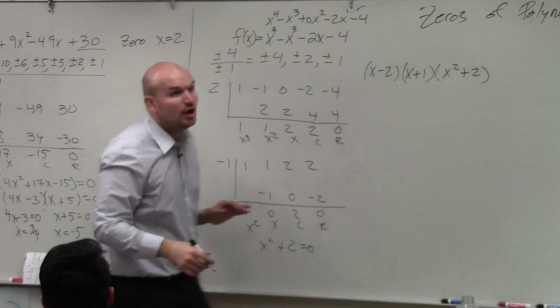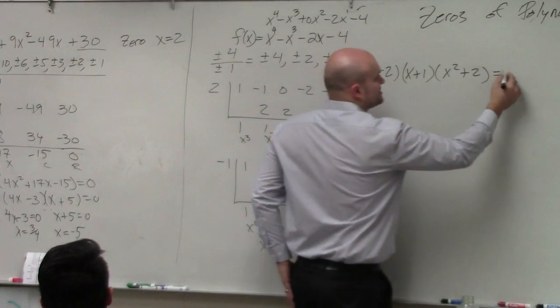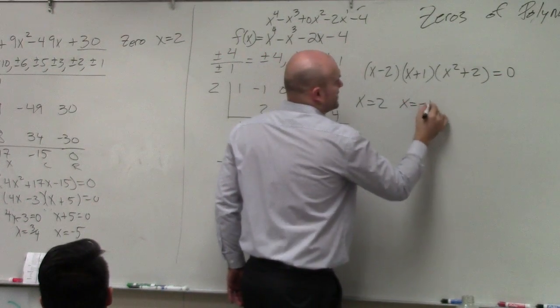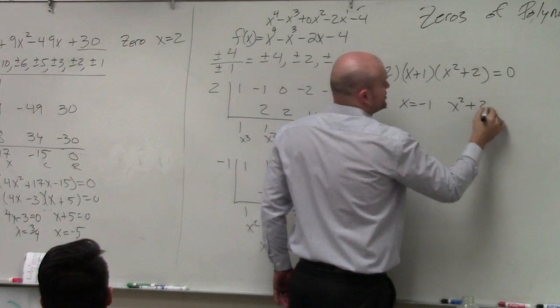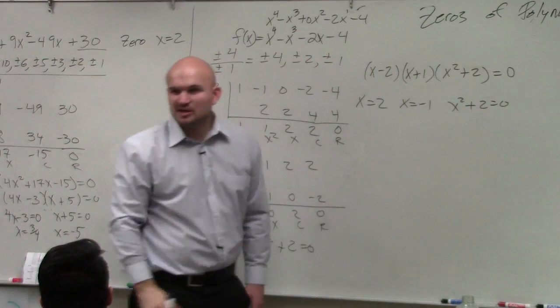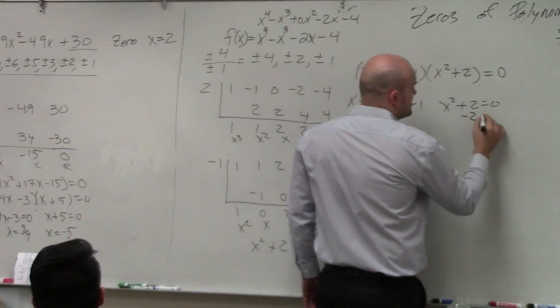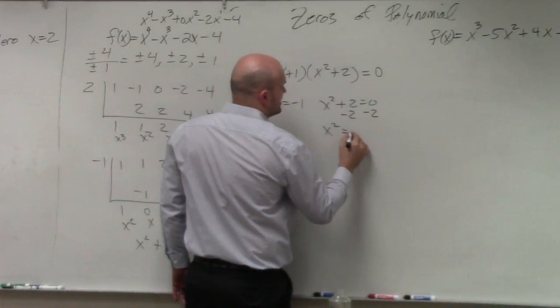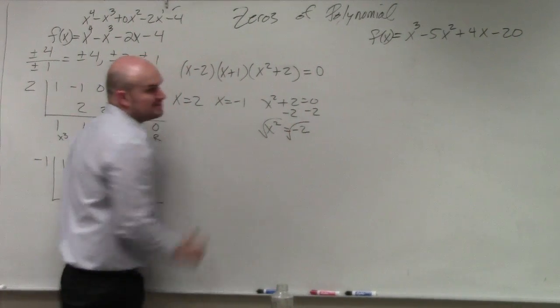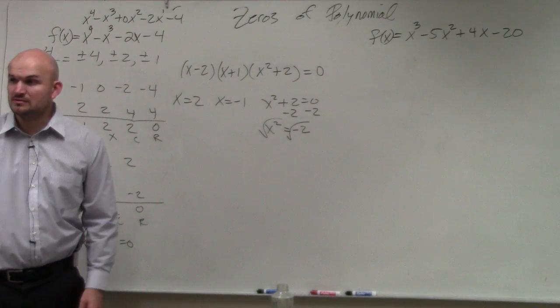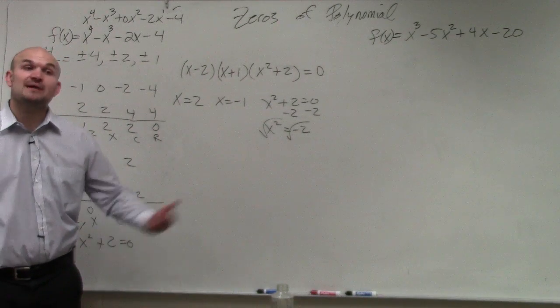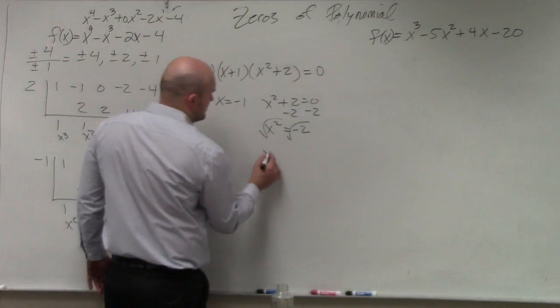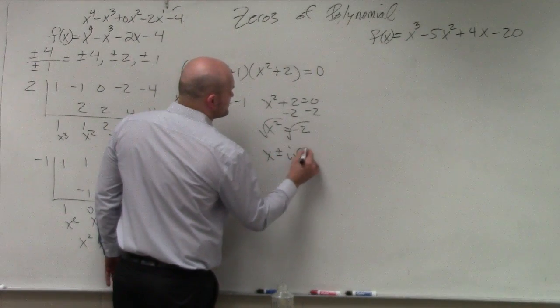And it says find all the zeros. So we set equal to 0, so we know x equals 2, x equals negative 1, x squared plus 2 equals 0. Uh-oh, this is going to cause a problem. Subtract 2, x squared equals negative 2, square root. Can we take square root of negative 2? Not in the real number system, but in the imaginary number system, we can obtain plus or minus i square root of 2.